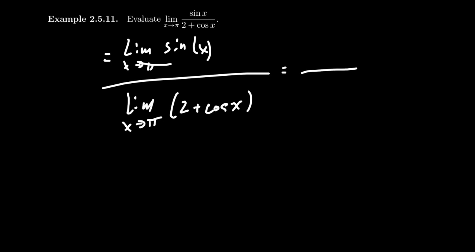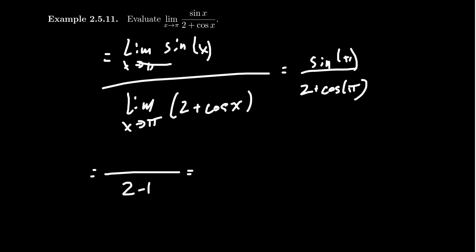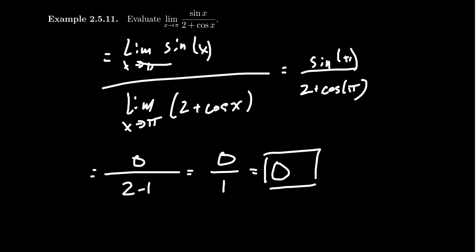Let's think about the denominator: we get 2 plus cosine of pi. The numerator is sine of pi. Cosine of pi is negative 1, so the denominator is 2 minus 1, which equals 1 — definitely not zero. On the other hand, sine of pi is 0. It's perfectly fine if the numerator is 0; we just don't want the denominator to go to zero, as that would cause discontinuity. So the limit here is 0 over 1, which is just 0.